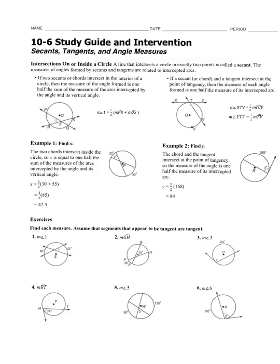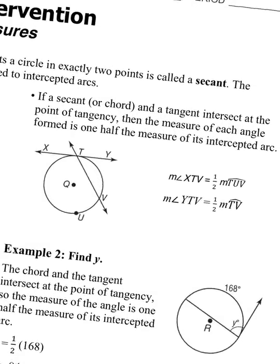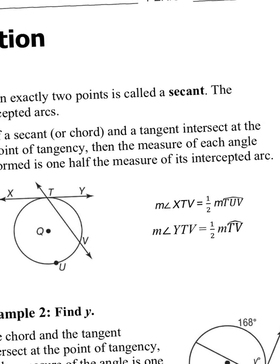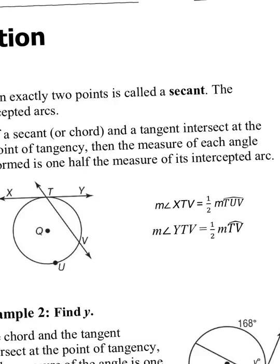A line that intersects a circle in exactly two points is called a secant. So far we've covered the word chord, and a chord has the intersections on the circle but it stops at the circle — the endpoints are on the circle. A secant is a chord that basically keeps on going.